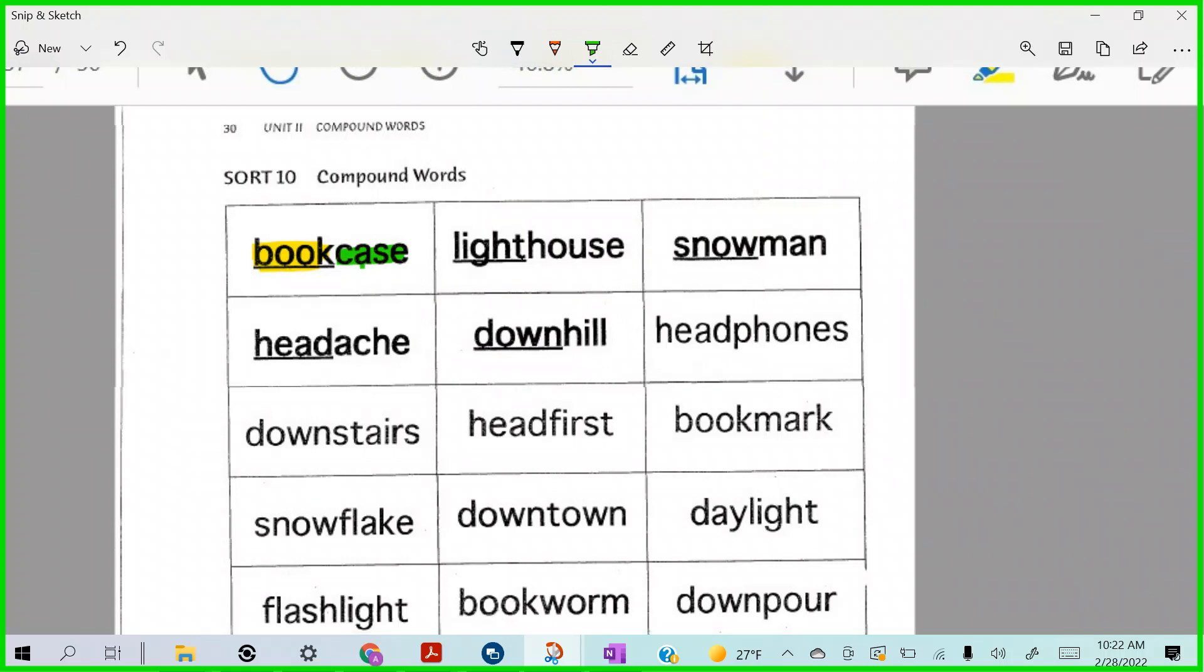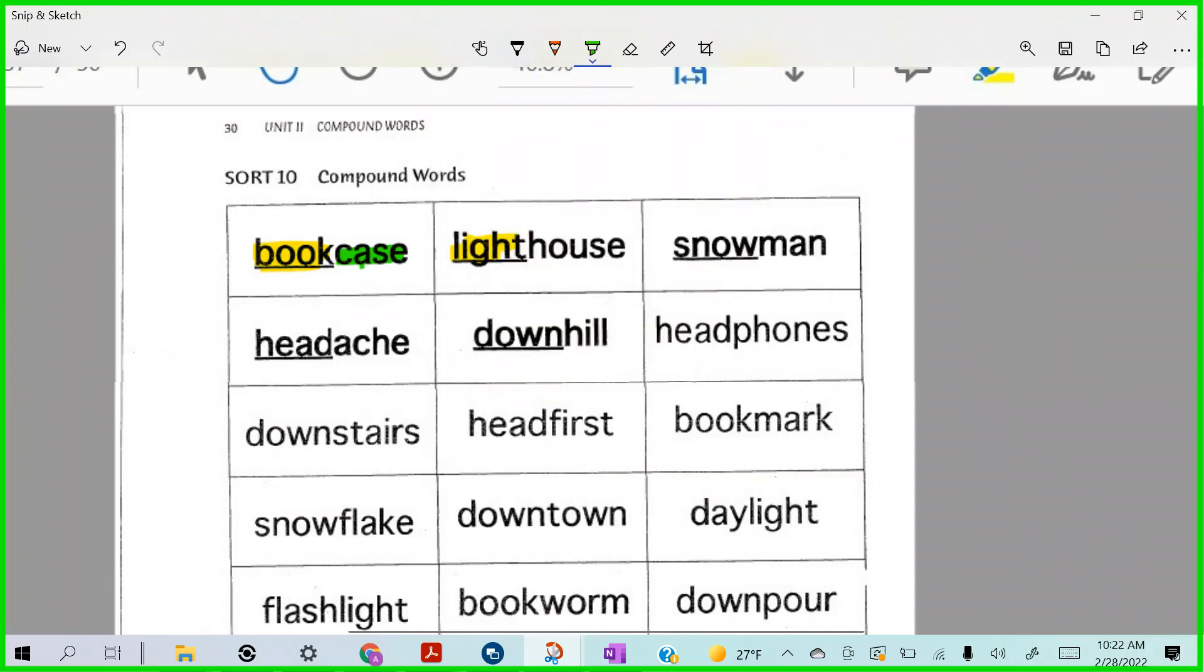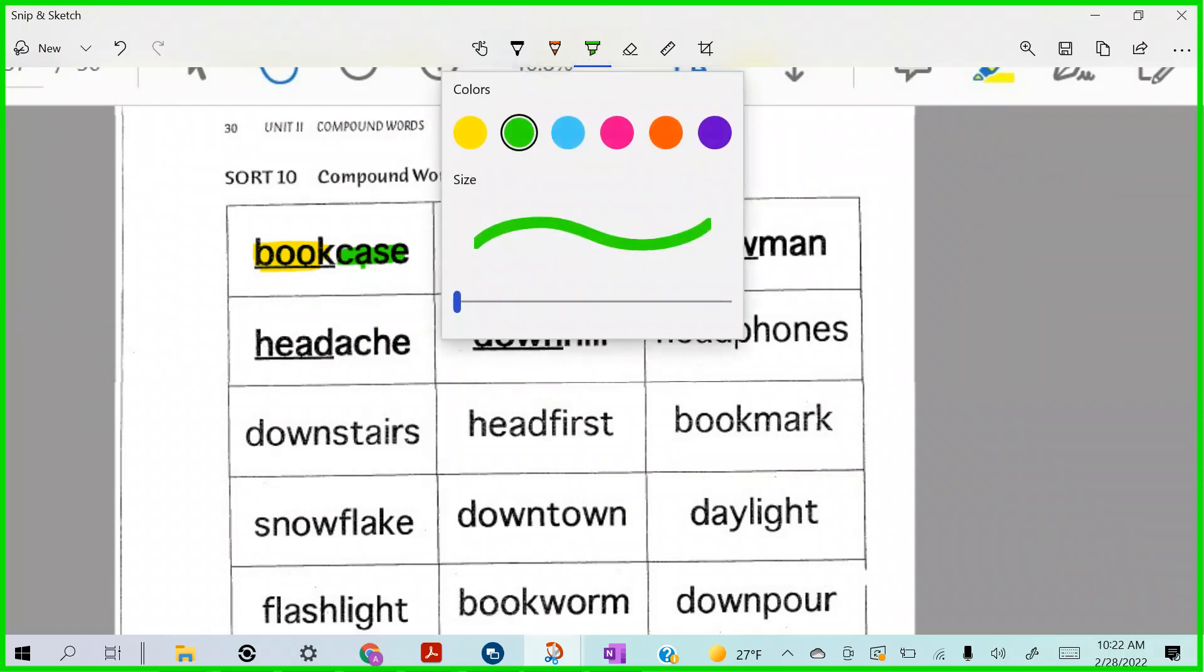That's exactly right, it's a compound word. Lighthouse. All right, let's do it. Light and then house. Snowman.